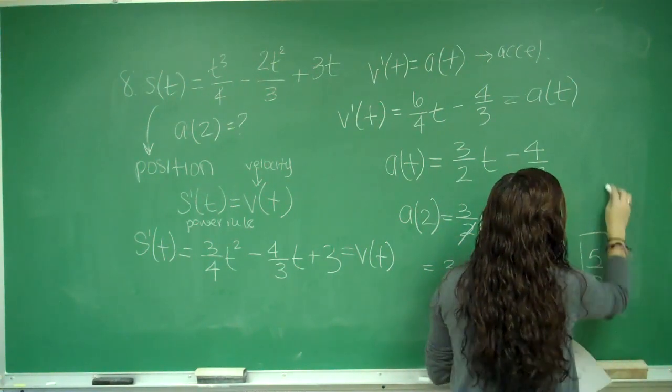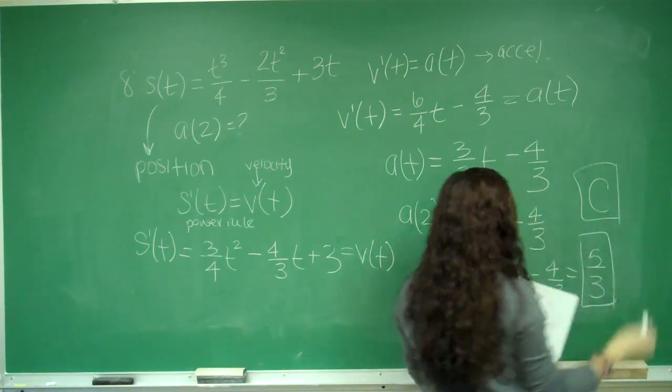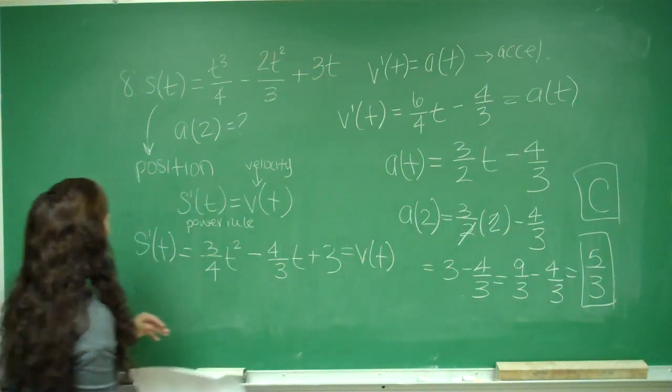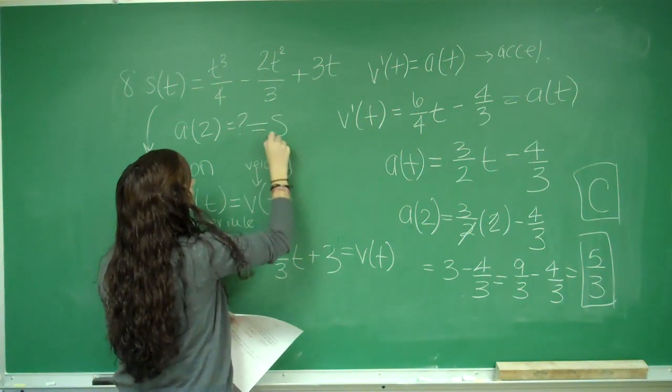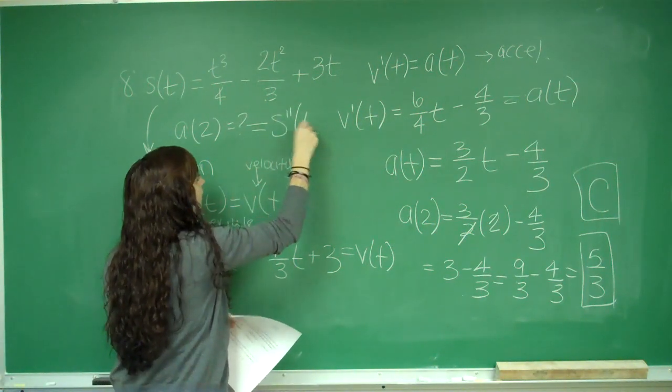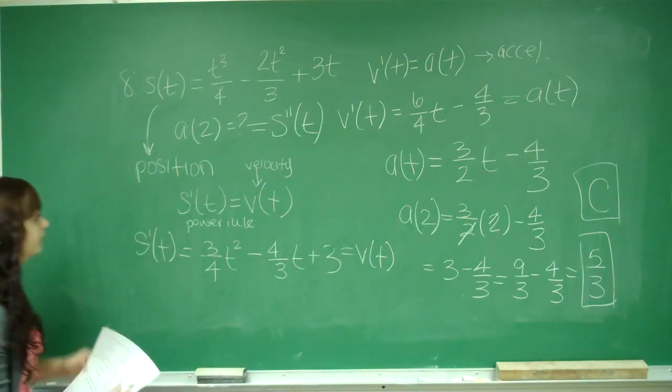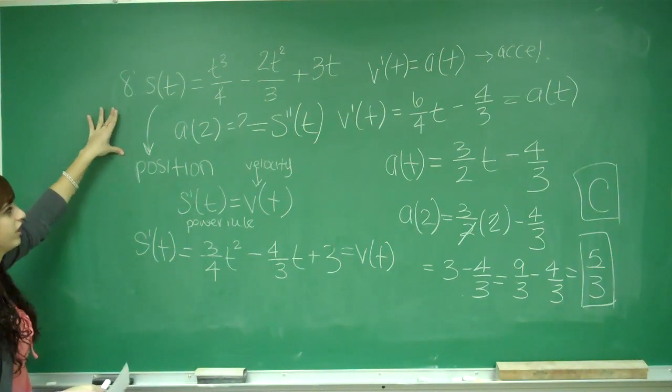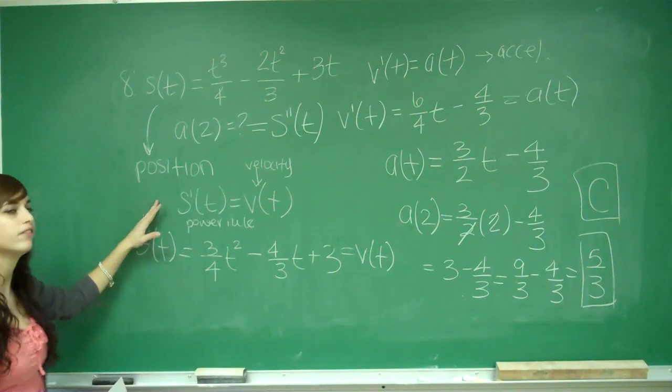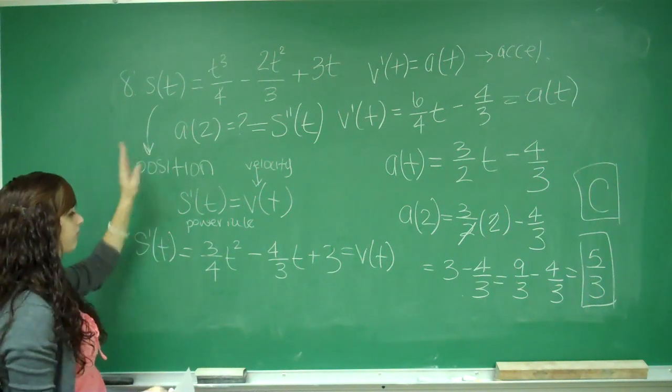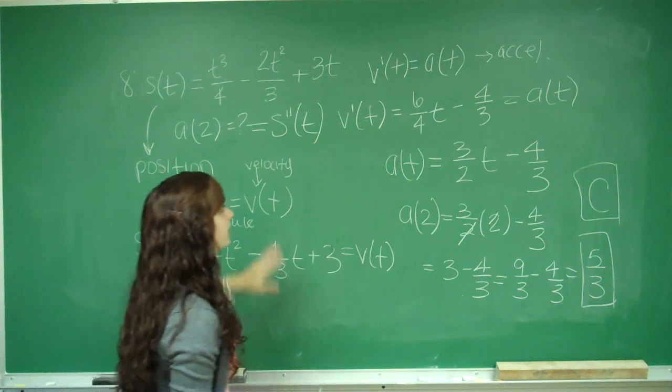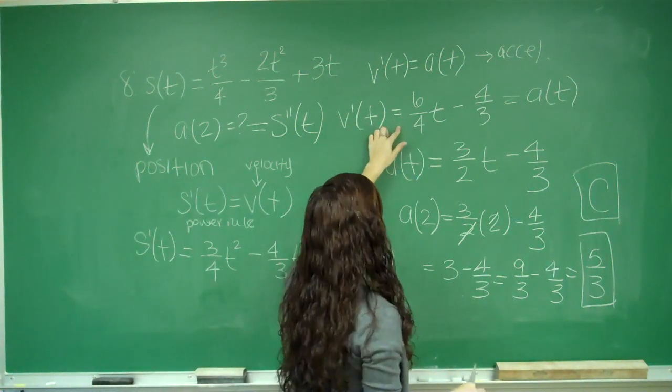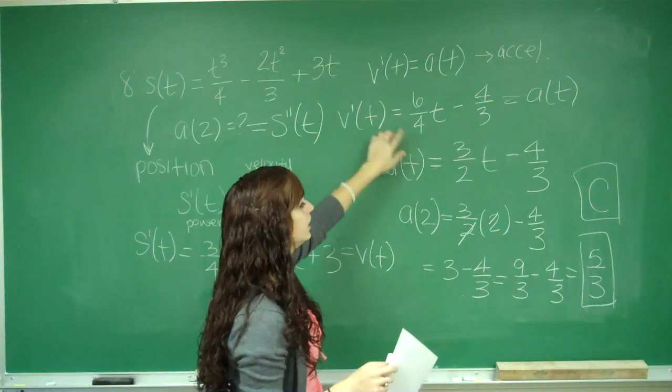And that is choice C. So just to review, the acceleration is going to be equal to s double prime of t, the second derivative. First I have the position function, then I find the velocity function by finding the derivative and I use power rule. And now that I have the velocity function, I find the derivative again to find the acceleration function, again using power rule.